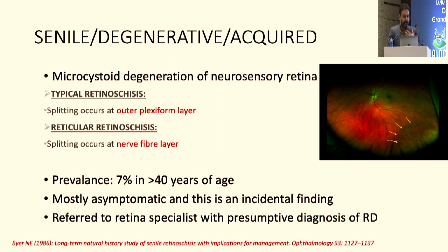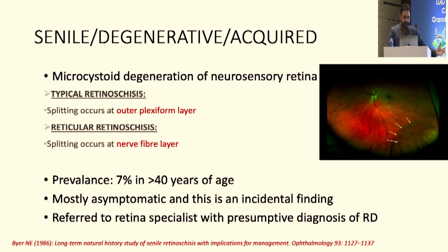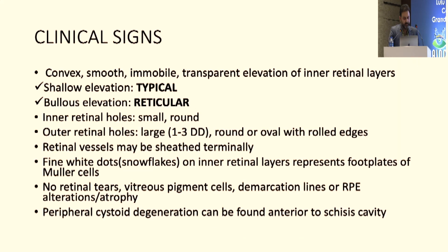Somehow these patients tend not to be picked up — either because of ignorance, lack of understanding, or because these are generally a lot less associated with retinal detachment. The chances that they will progress to detachment are lower, and patients, despite having a bullous elevation in the peripheral retina, remain asymptomatic until they actually get a retinal detachment.